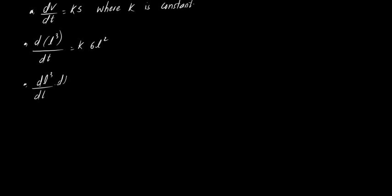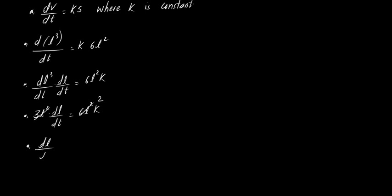Differentiating the left side: d(L³)/dt = 3L² times dL/dt, and this equals 6kL². Dividing both sides by 3L², we get dL/dt = 2k.